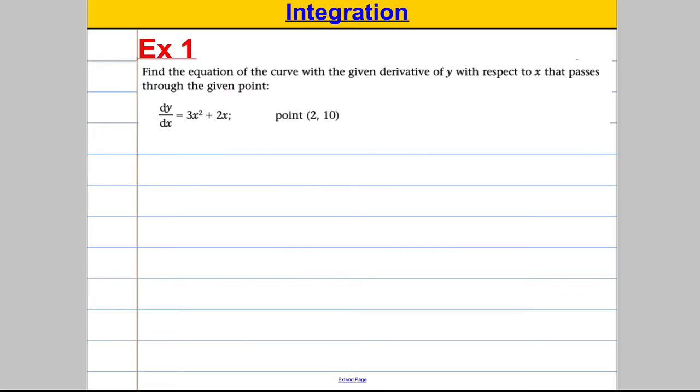Let's do two examples. Find the equation of the curve with the given derivative. Derivative just means the gradient function, that passes through the given point 2, 10. The first thing we're going to do, as we always do, is write dy by dx is equal to 3x squared add 2x. We're going to integrate both sides with respect to x.